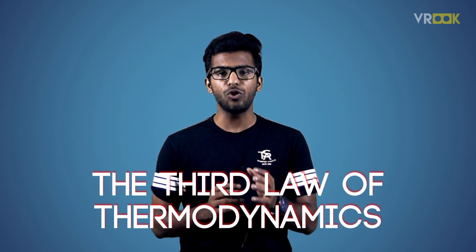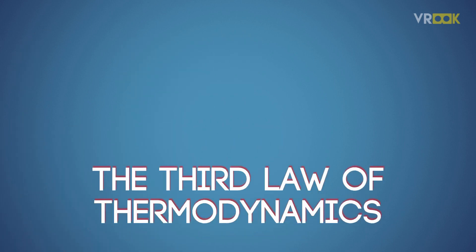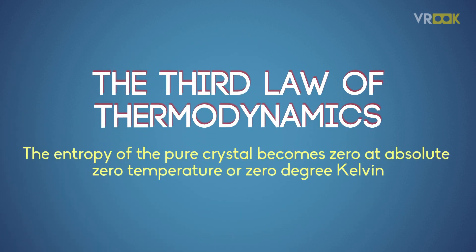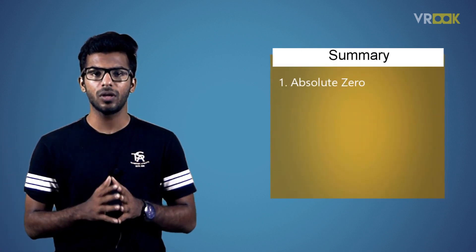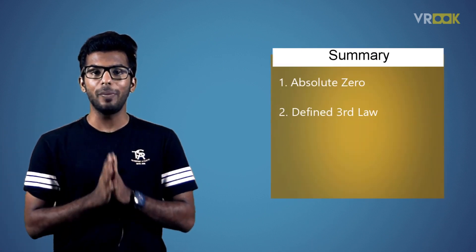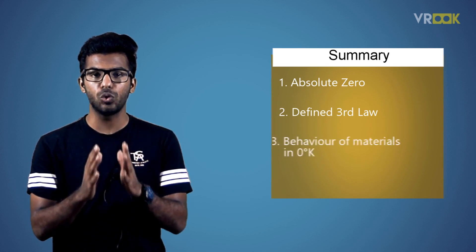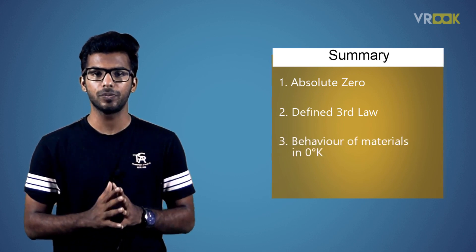Recalling the third law: the entropy of a perfect crystal is zero when the temperature of the crystal is equal to absolute zero Kelvin. To sum up, we learned about absolute zero, the definition of the third law, and how materials might behave at absolute zero. That is all about the third law of thermodynamics.